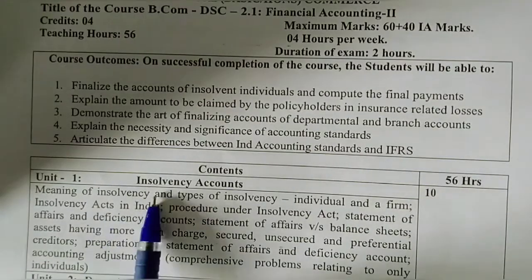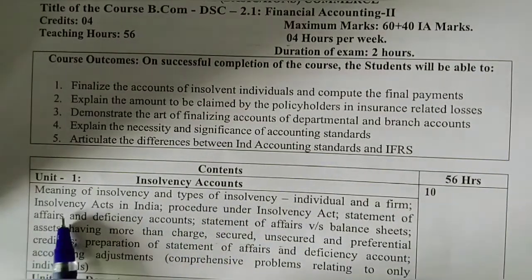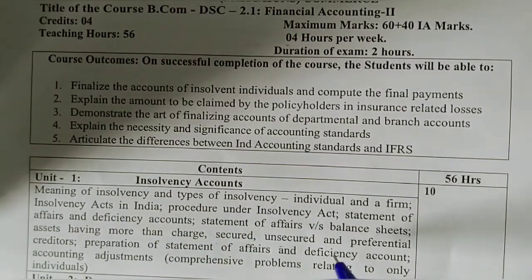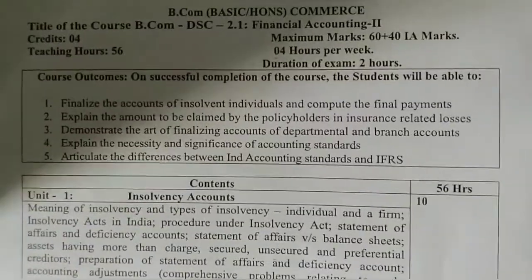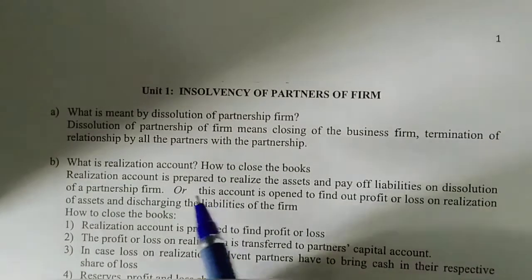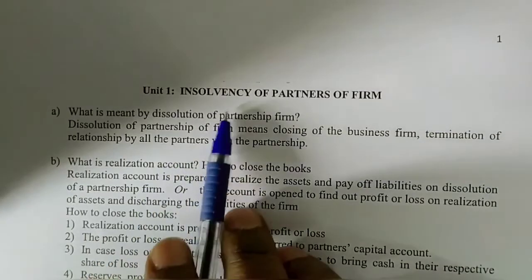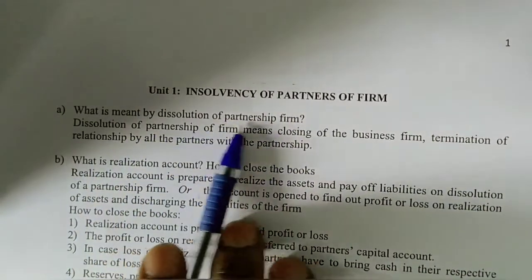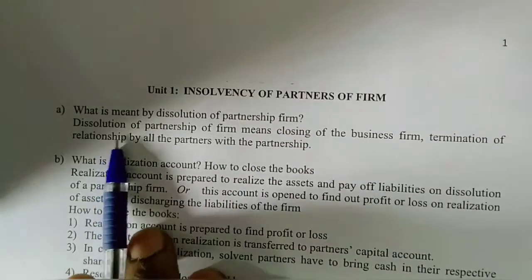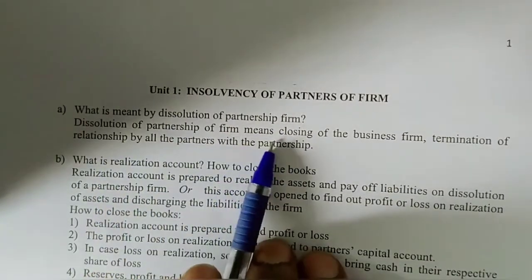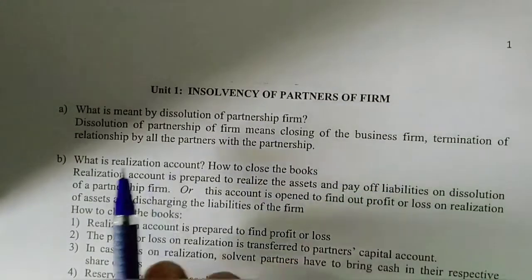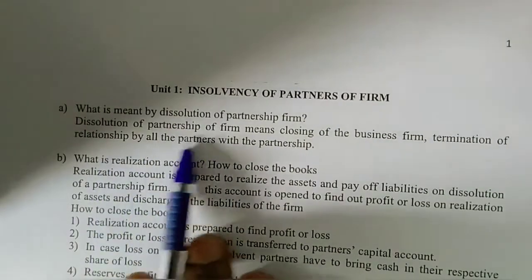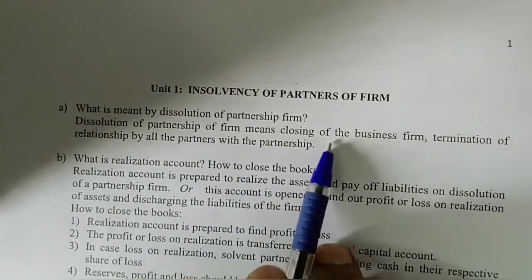Today we start the Insolvency unit, covering the meaning and types of insolvency. Before actual problems begin, let us first learn some basic short question and answer types involved in insolvency of partners of firms. What is meant by dissolution of a partnership firm? Dissolution means the closing of a business firm and termination of the relationship among all partners with their partnership.